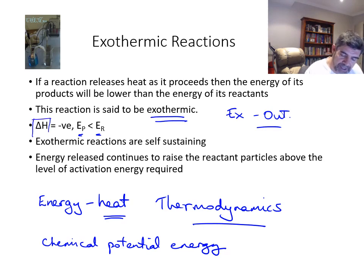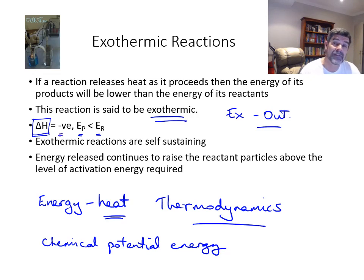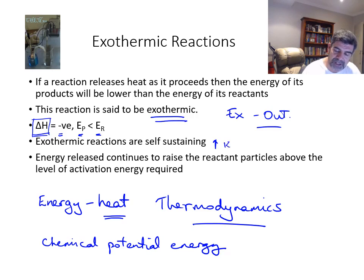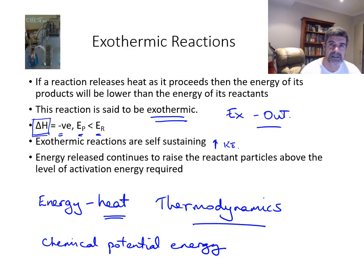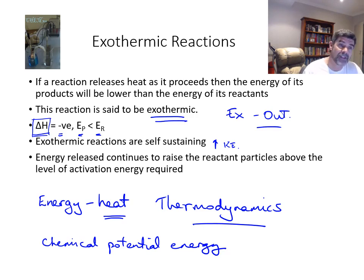We're going to be looking at a way of identifying this in a concept which we'll describe called enthalpy. This delta H value, which represents the enthalpy change, is a negative value for an exothermic reaction — that is, the energy of the products is less than the energy of the reactants. Exothermic reactions are often self-sustaining. That's because the extra energy being released is raising the average kinetic energy of the particles and helping them to be at a sufficient energy level to react. As the reaction proceeds, more energy is given out, and energy released continues to raise the reactant particles above the level of activation energy that they require.